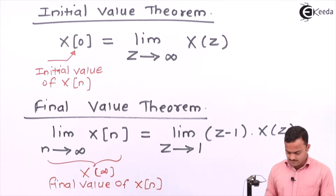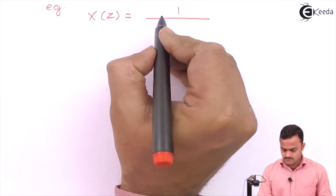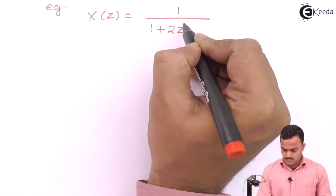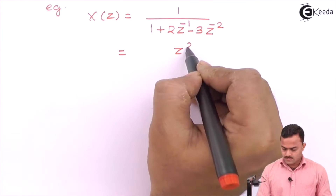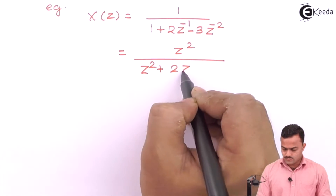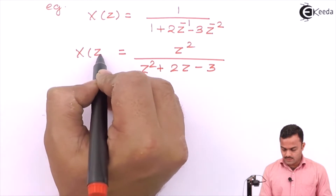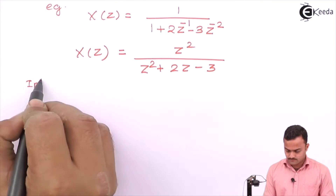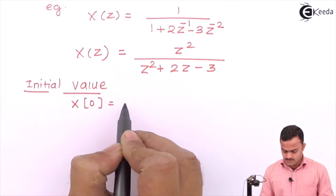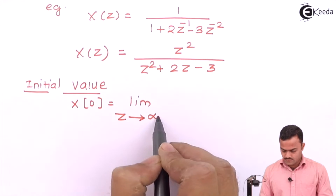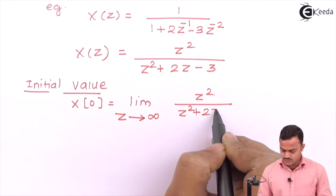Let's illustrate this with a simple example. We have X(z) as 1 upon (1 plus 2z⁻¹ minus 3z⁻²). If I simplify this I will get z² upon (z² plus 2z minus 3). This is the X(z) we will work with. Let's find out the initial value: x(0) is the limit as z tends to infinity of z² upon (z² plus 2z minus 3).